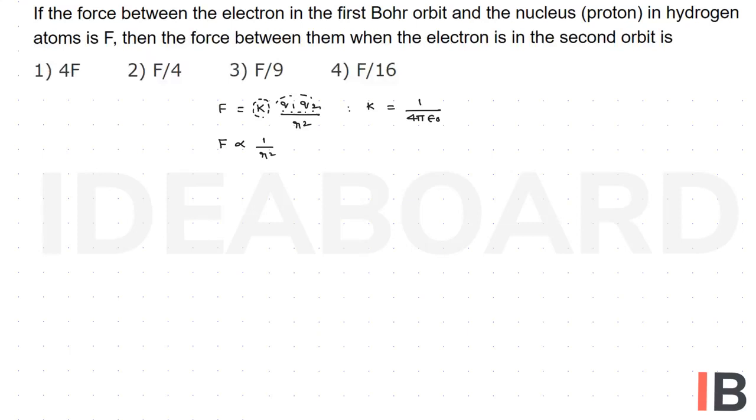Through that, let us write F is inversely proportional to r square. F1 is inversely proportional to r1 square, F2 is inversely proportional to r2 square. If I take the F1 by F2 ratio, F1 by F2 is equal to r2 by r1 whole square.